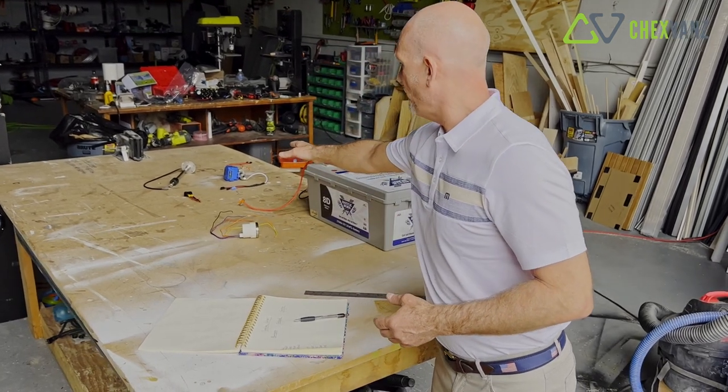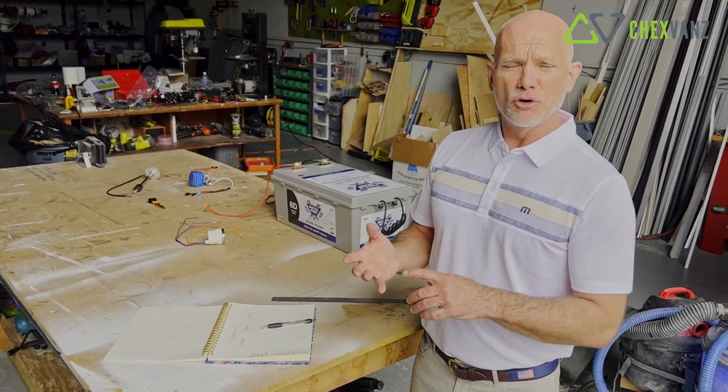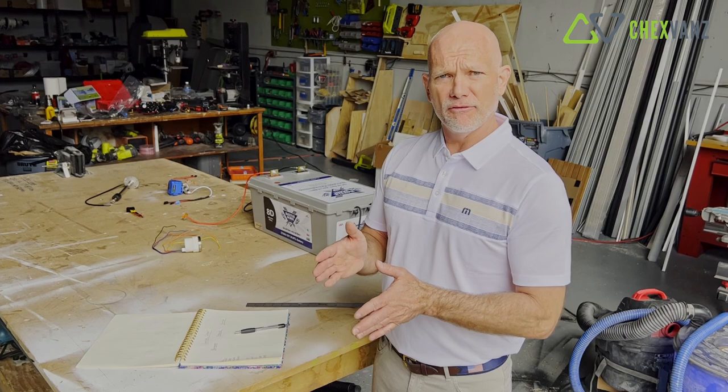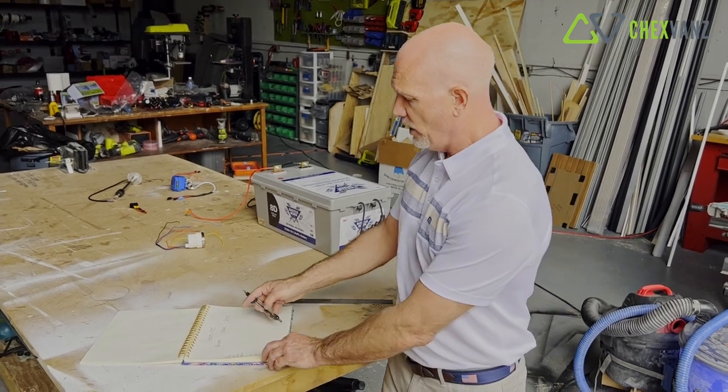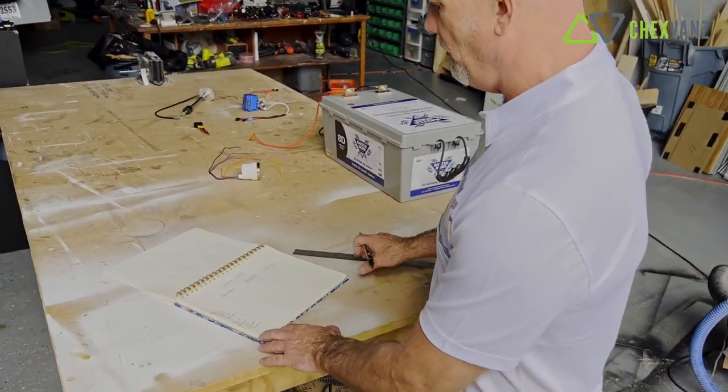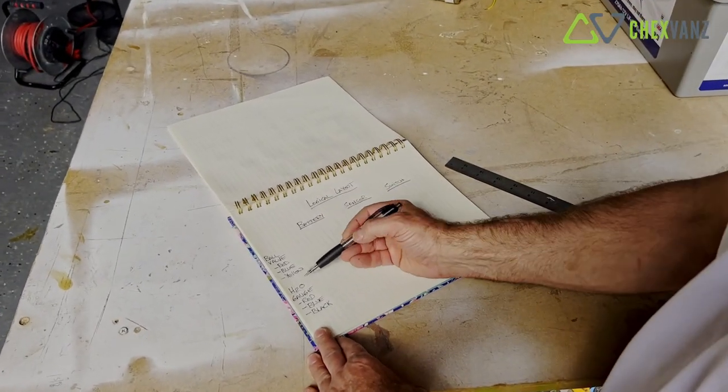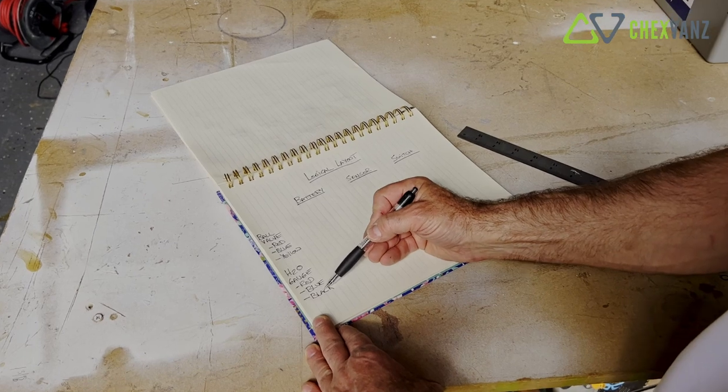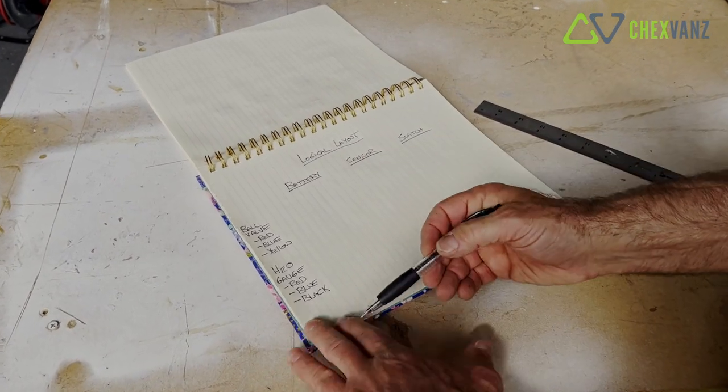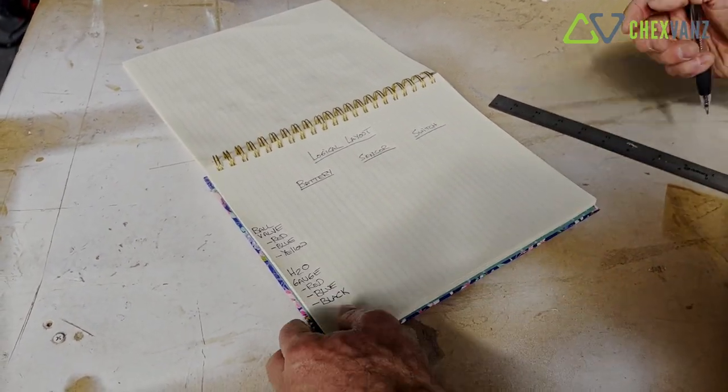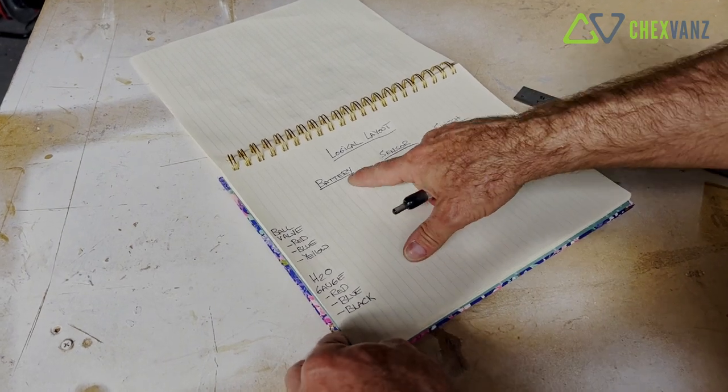On the motorized ball valve, we have a ground and we have an on-off. So we took the liberty here on this sheet of paper to write down: we have a ball valve with red, blue, yellow. We have a water gauge with red, blue, black, disregarding the orange and the red for color right now. We have a sensor, a switch, and a battery.